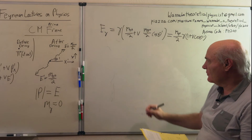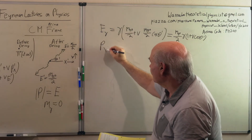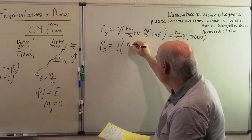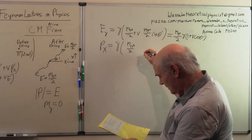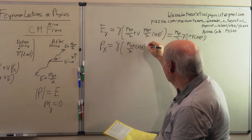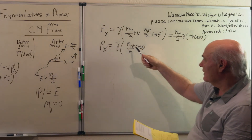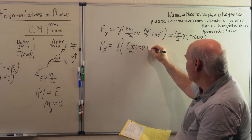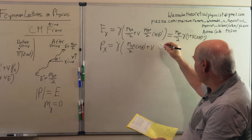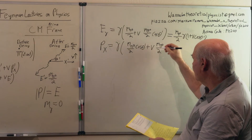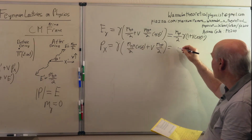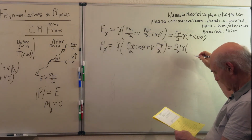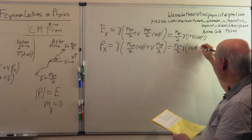Now our next equation, the px equation: this equals gamma times (m pi-zero over 2) times cosine theta prime — the momentum in the center of momentum frame — plus v times (m pi-zero over 2), the energy in that frame. Factoring out, this is (m pi-zero / 2) * gamma * (cos(theta prime) + v).